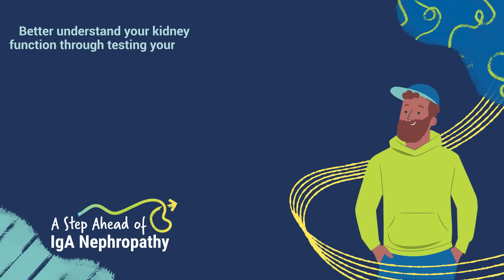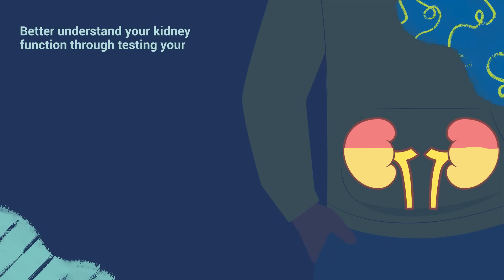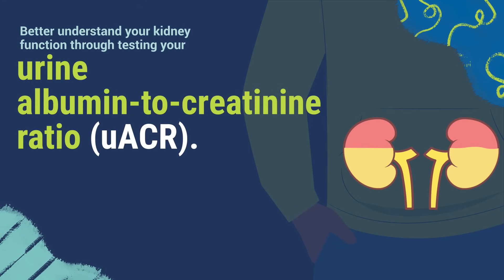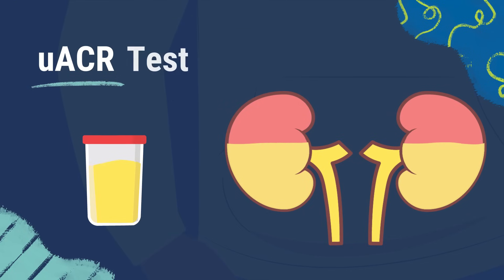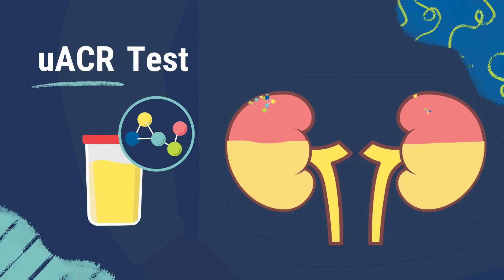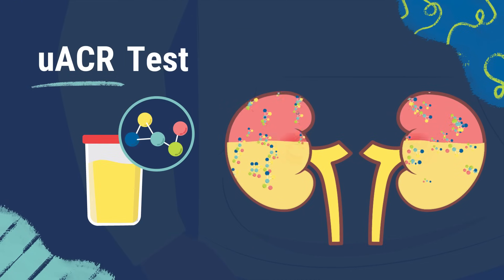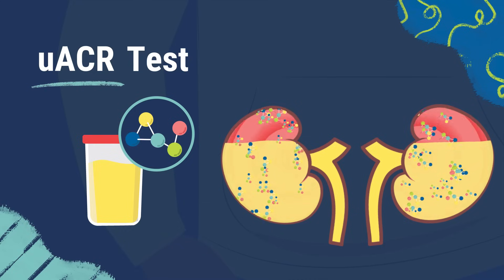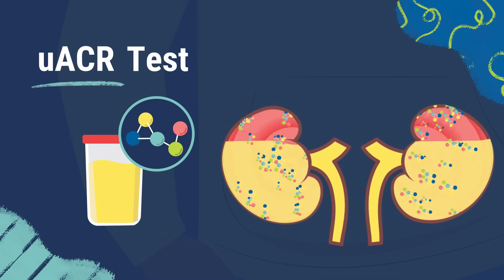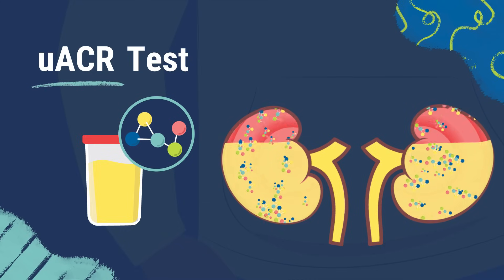One way to better understand your kidney function is through testing your urine albumin to creatinine ratio, or UACR. The UACR test measures how much protein is in your urine, or pee. Too much protein in your pee, which is called proteinuria, can mean that the filters in your kidney aren't working as well as they should.